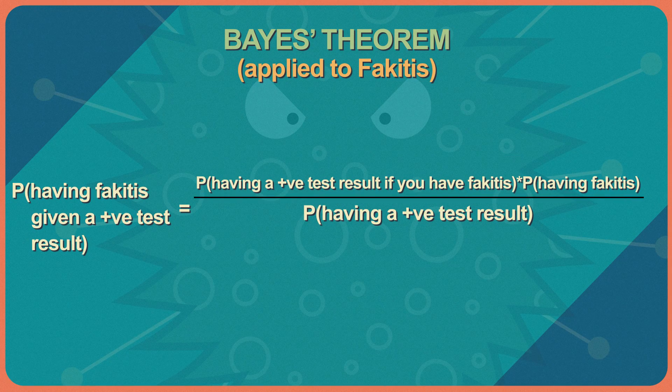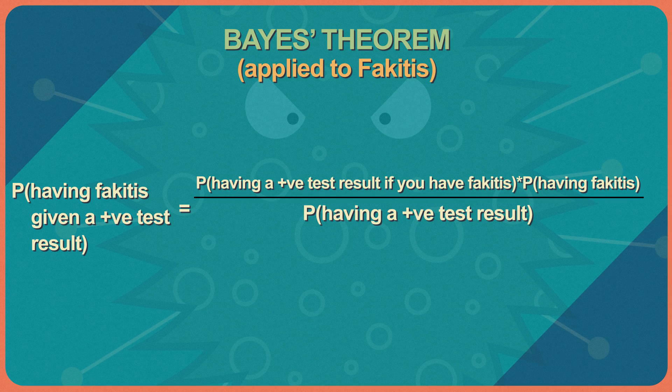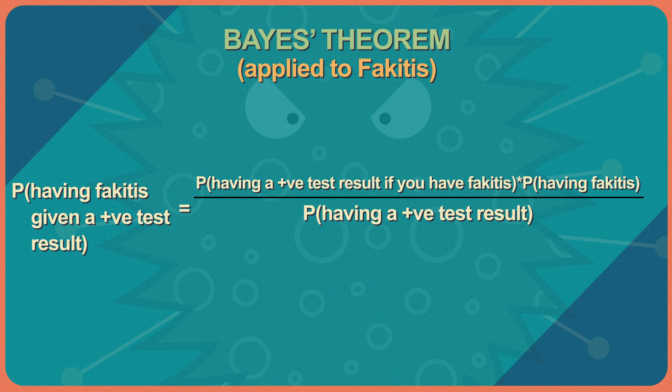In this case, A is having fake-itis and B is a positive test result. So Bayes' theorem says that the probability of having fake-itis given a positive test result is equal to the probability of having a positive test result if you have fake-itis, times the probability of having fake-itis, divided by the probability of having a positive test result. And I know that's still complicated, but you don't really need to do the math here — you just need to understand the principle.